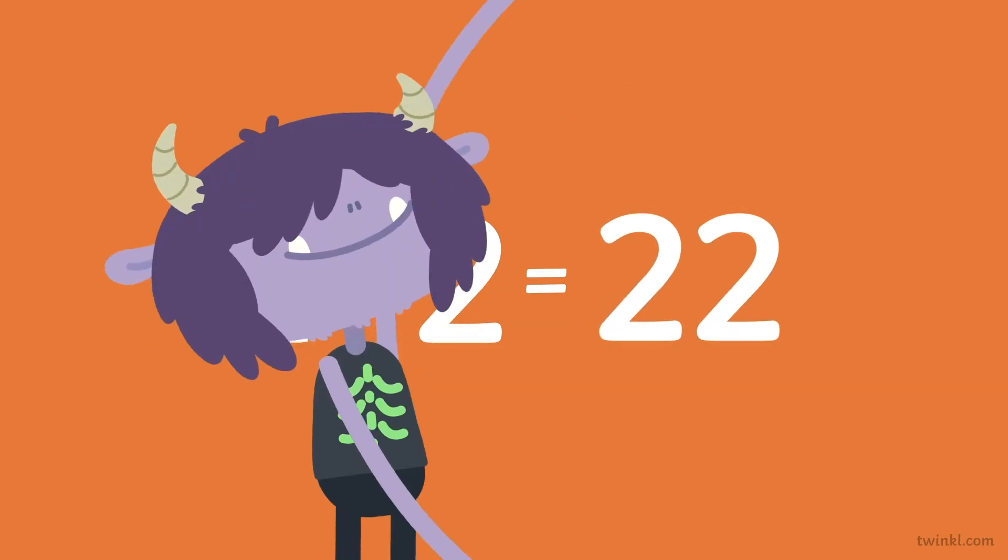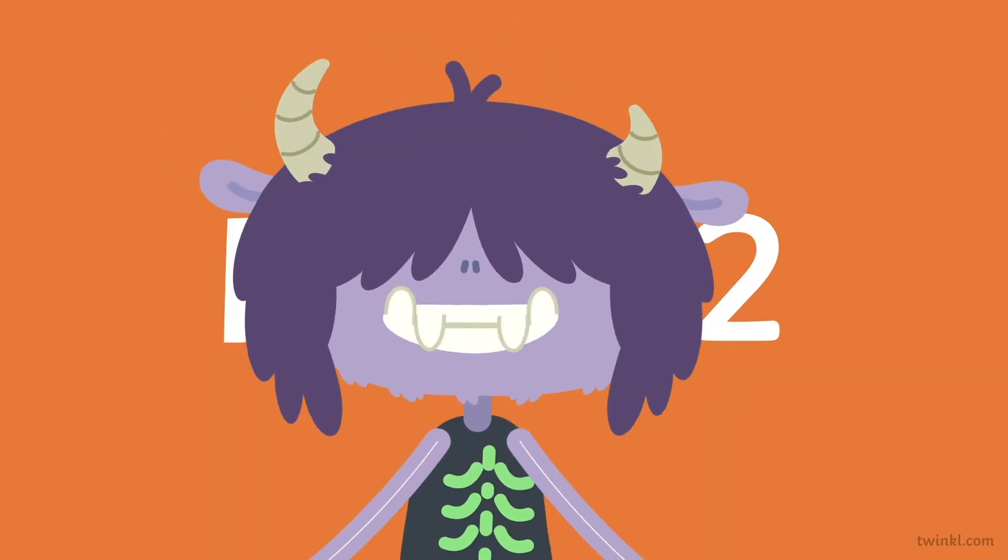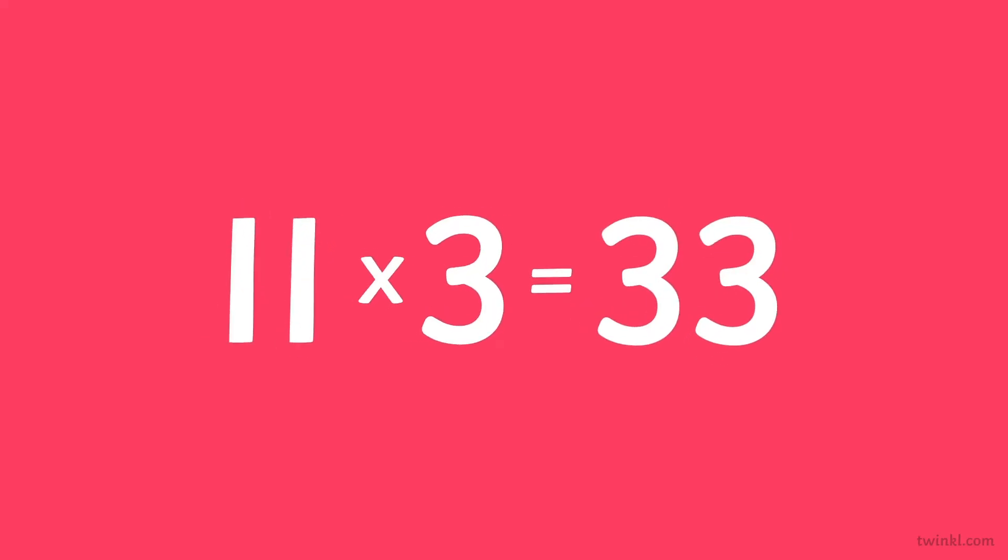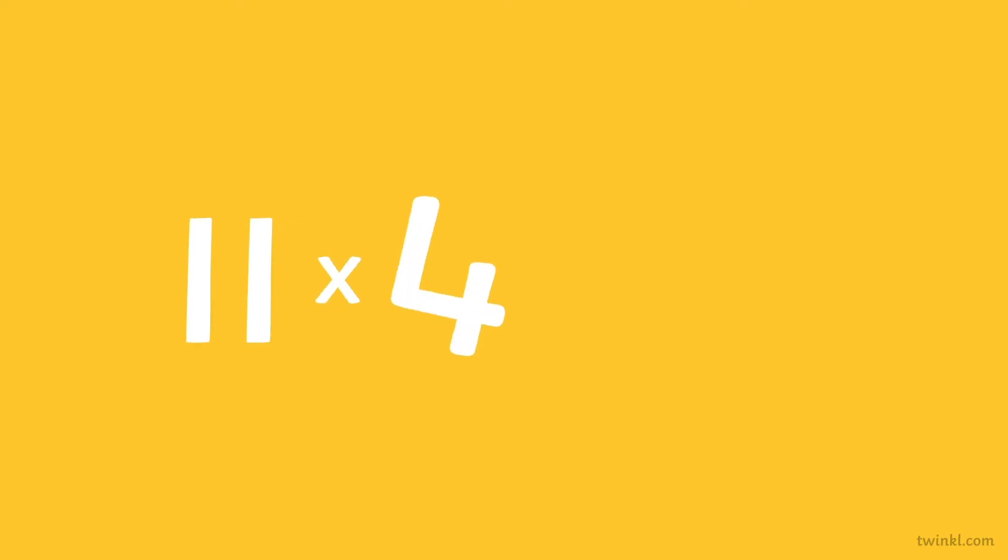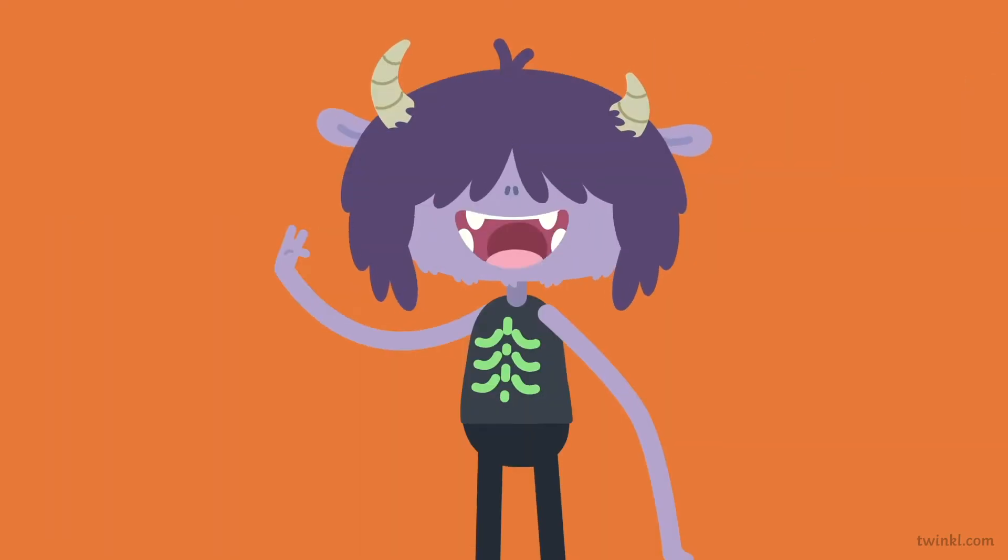Eleven times one is eleven. Eleven times two is twenty-two. The two numbers are both the same. Let's see if it happens again. Eleven times three is thirty-three. Eleven times four is forty-four. Eleven times five is fifty-five. That's the pattern.